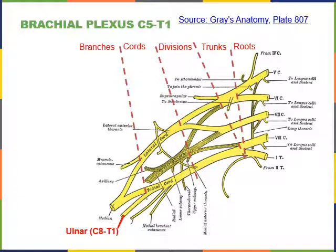The ulnar nerve arises from the ventral rami of C8 through T1, branches off the medial cord, and travels down the medial side of the arm and forearm. It excites flexors of the wrist and fingers, including flexor digitorum profundus and flexor carpi ulnaris.